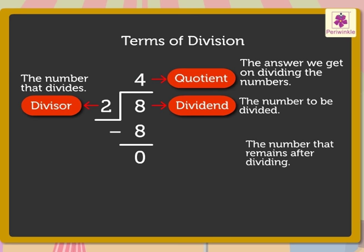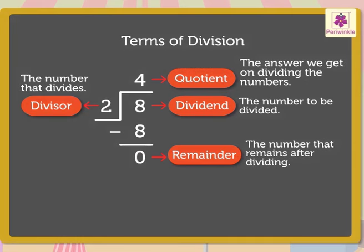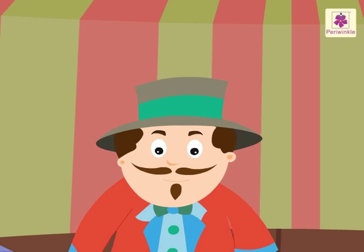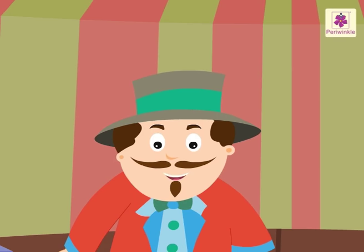The number that remains after dividing is called the remainder. Here, number 0 is the remainder. Did you notice that the quotient is equal to the number of times we subtracted? Now friends, I will ask you a question — let me see if you can answer it.